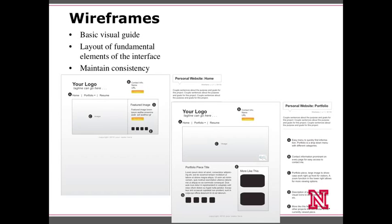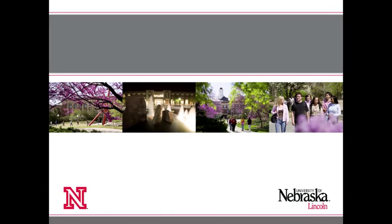The last thing we'll discuss is wireframes, which will be part of this week's assignment. Wireframes are basically a sketch — a visual guide to what a website might look like, showing the layout of the fundamental elements of the interface. They help maintain consistency when designing sub-pages for your site. The important thing to note about a wireframe is the level of detail: the more detail you can put in, the easier it will be to convert to an actual HTML and CSS page. That's our introduction to the World Wide Web — next week we'll talk about HTML.